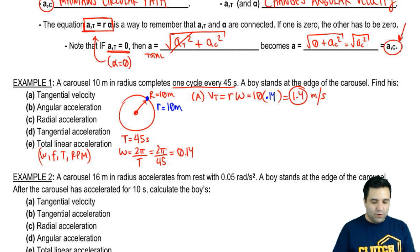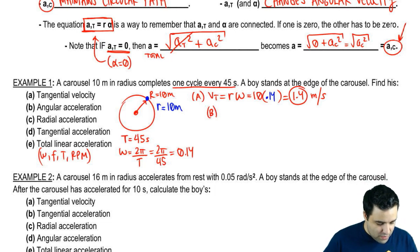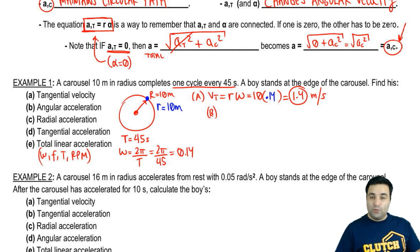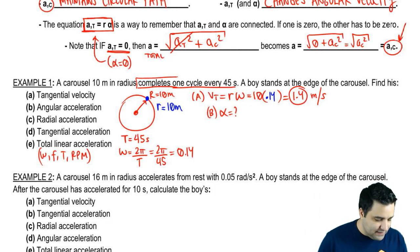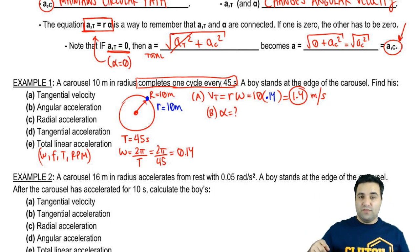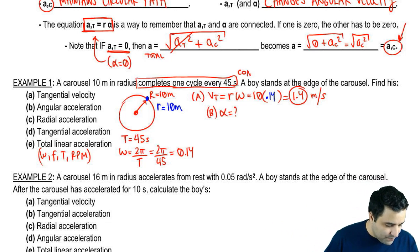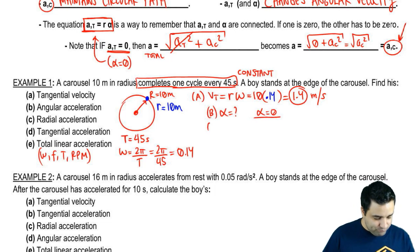For part B, I want to know what is the angular acceleration. Angular acceleration is alpha. Now, remember, you only have alpha if you're actually spinning faster. It says that it completes one cycle every 45 seconds. First 45 seconds, one cycle. Second 45 seconds, another cycle. It implies that this is a constant, constant movement at a constant rate at a constant velocity. So alpha is actually zero.